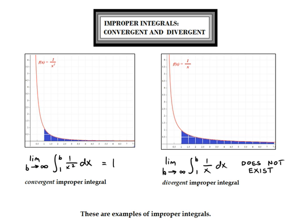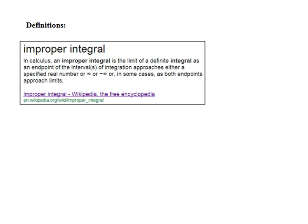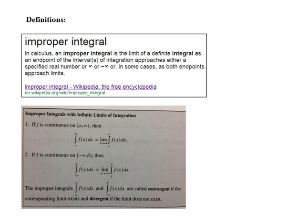Let's take a look at our definitions. The first one is pulled from Wikipedia — you can read it if you'd like — it summarizes what's already been said. Then there is a textbook definition of convergent and divergent improper integrals. That's all for now. More videos to follow that further explore these wonderful concepts. Bye-bye.